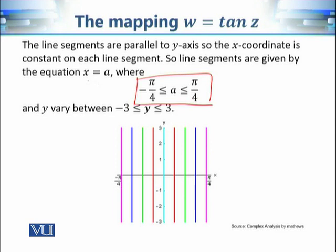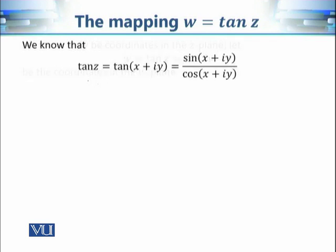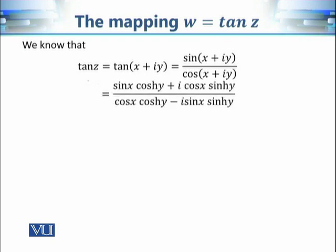To study the images of these line segments under the mapping tan(z), we first want to find u and v in the w-plane. If w = tan(z) = u + iv, where z = x + iy, then tan(z) = tan(x + iy) = sin(x + iy) / cos(x + iy). We know that sin(x + iy) = sin(x)cosh(y) + i·cos(x)sinh(y), divided by the corresponding expansion for cosine.